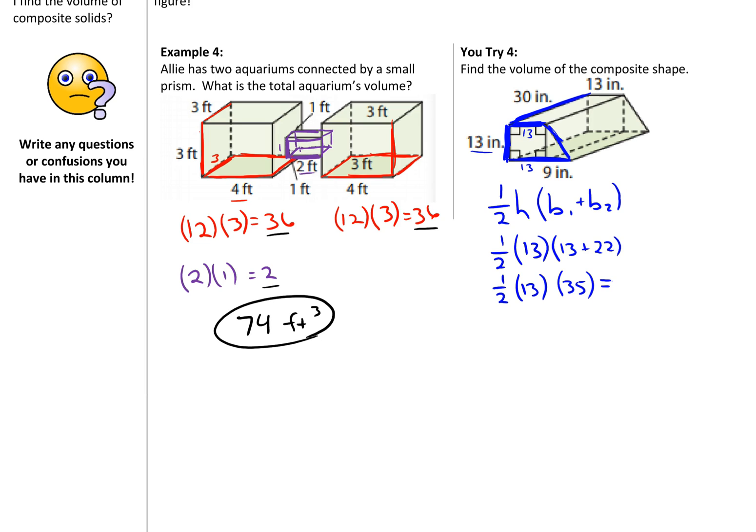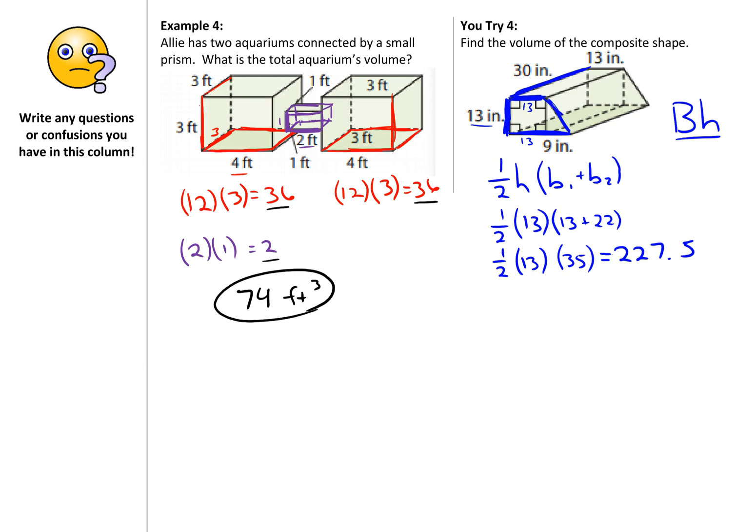Okay, so half of 13 times 35 gives you 227.5. And this is a prism, so don't forget area of the base times height to find the volume. 227.5 times the height, which is 30. So that length, even though it's laying on its side, that height is still 30. And that should have given you a total area of 6,825 inches cubed.